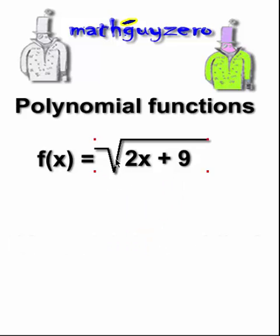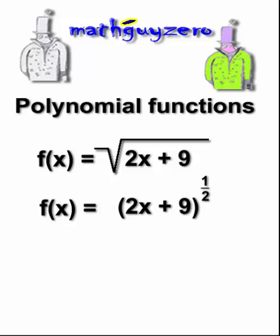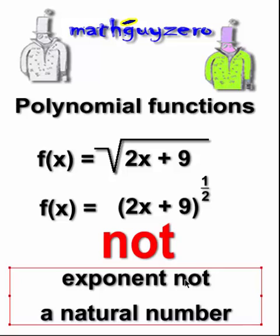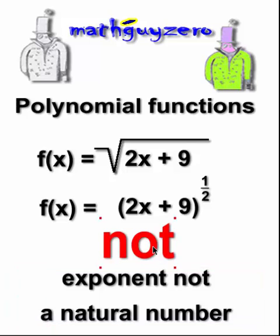But here's another reason for this one. This radical sign can also be rewritten as an exponent of one-half. One-half is not a natural number, and exponents have to be natural numbers. So for two reasons, this is not a polynomial function.